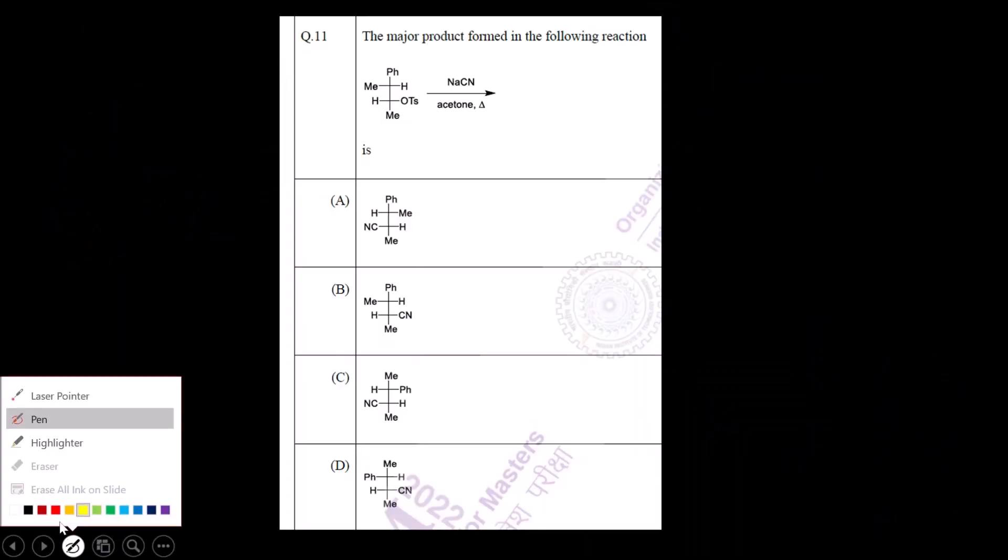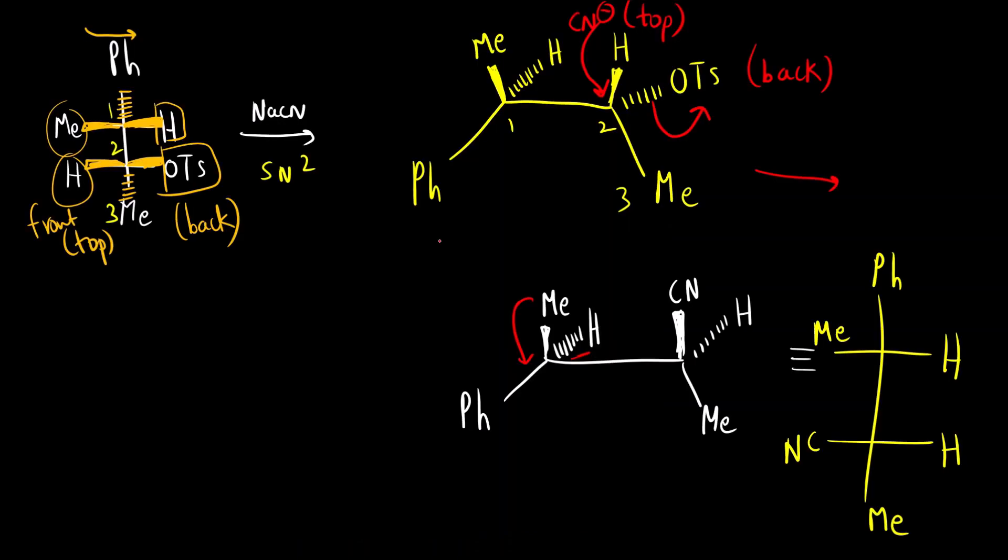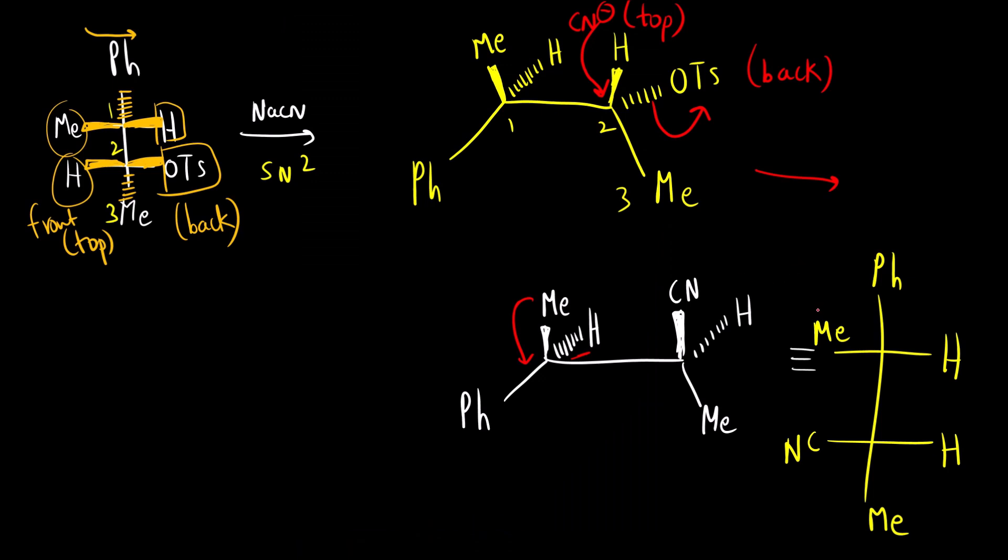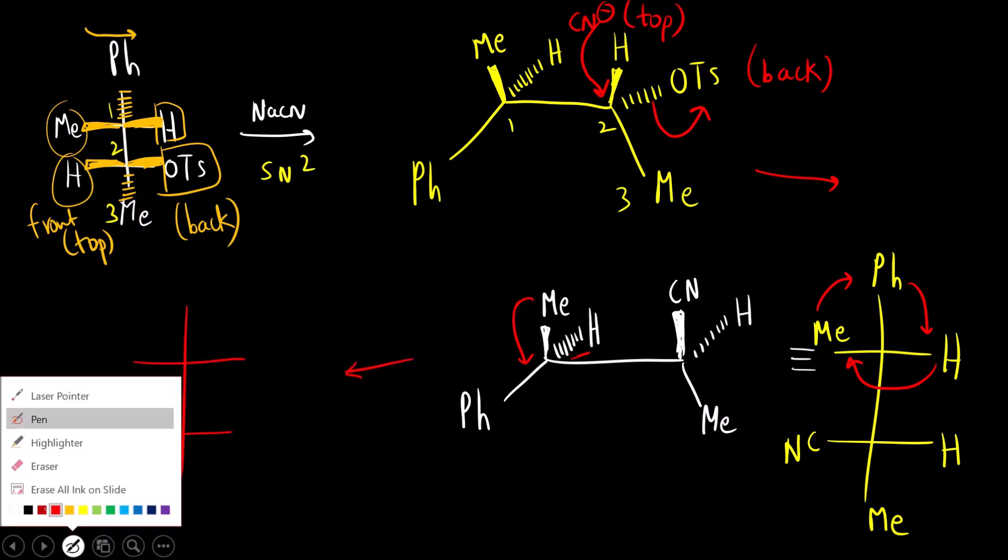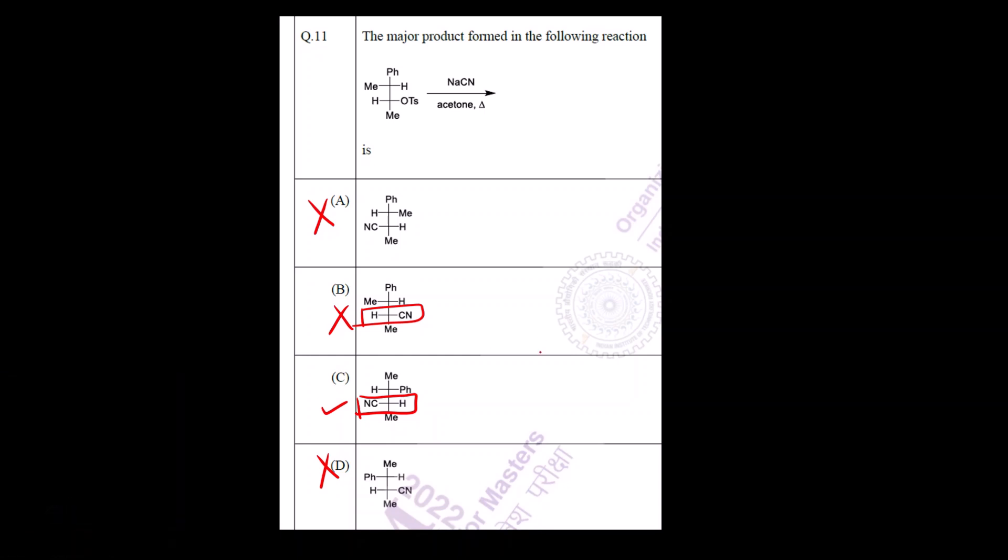Now let us see which is the correct answer. CN should be at the left and hydrogen at the right. We have already eliminated options A and D. Now we want CN at the left. You can see this is not the correct stereochemistry - H, CN - this is not the correct answer. Now how we can match with the product we have drawn? We have to rotate this. They have kept methyl at the top. So methyl will come here, Ph will come here and hydrogen will come here. The final product is Ph at the right, methyl at the top, hydrogen at the left, cyanide, hydrogen, Me. So the correct answer is option C.